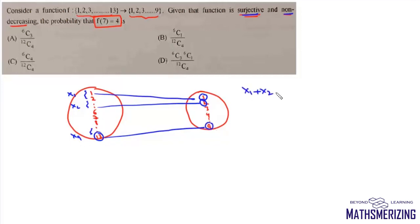Each xi must be greater than or equal to 1. At least one of the elements should be mapped to each element in the codomain so that this function can be a surjective function.